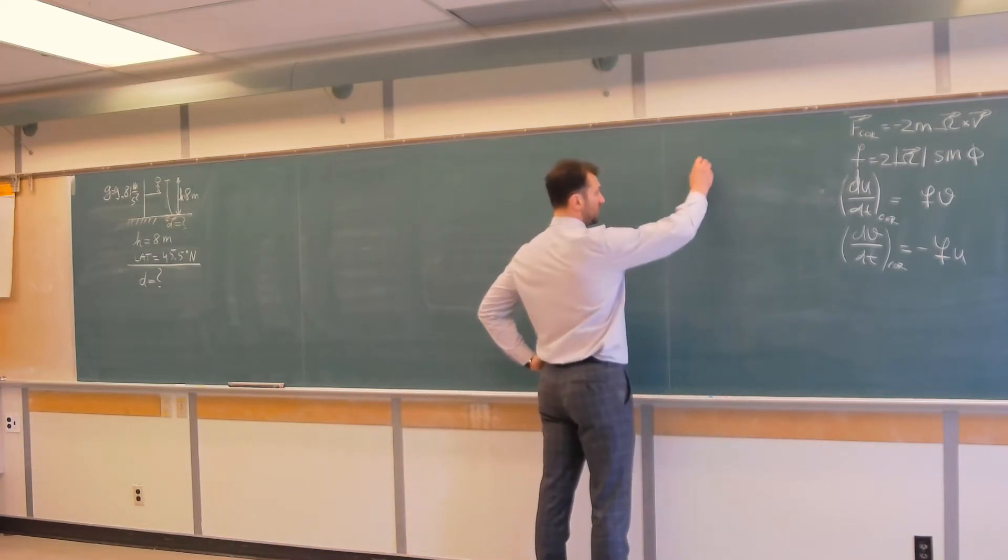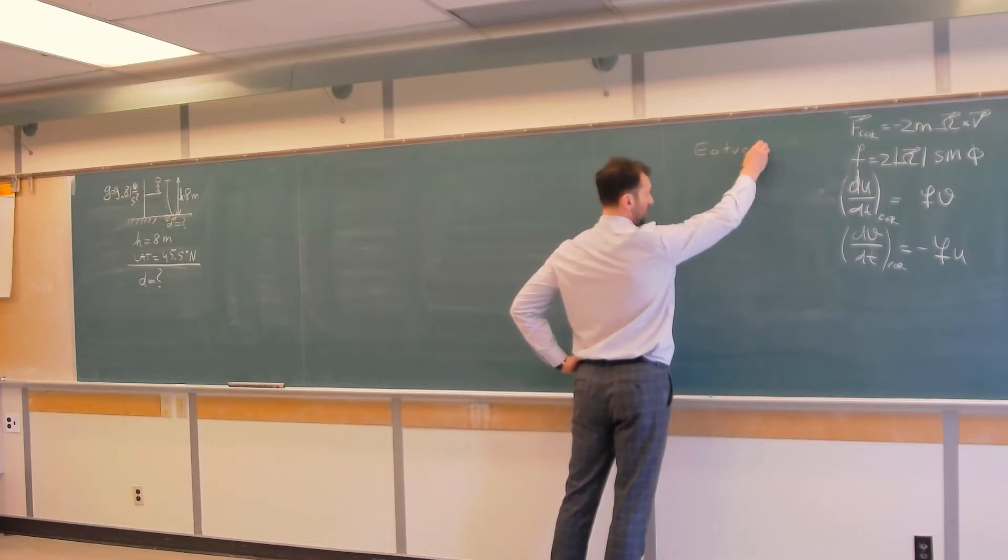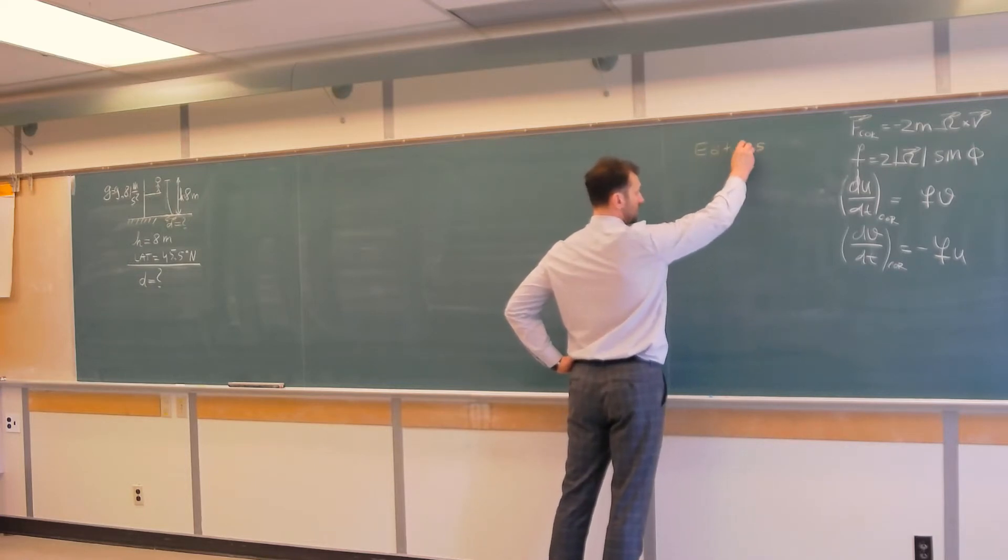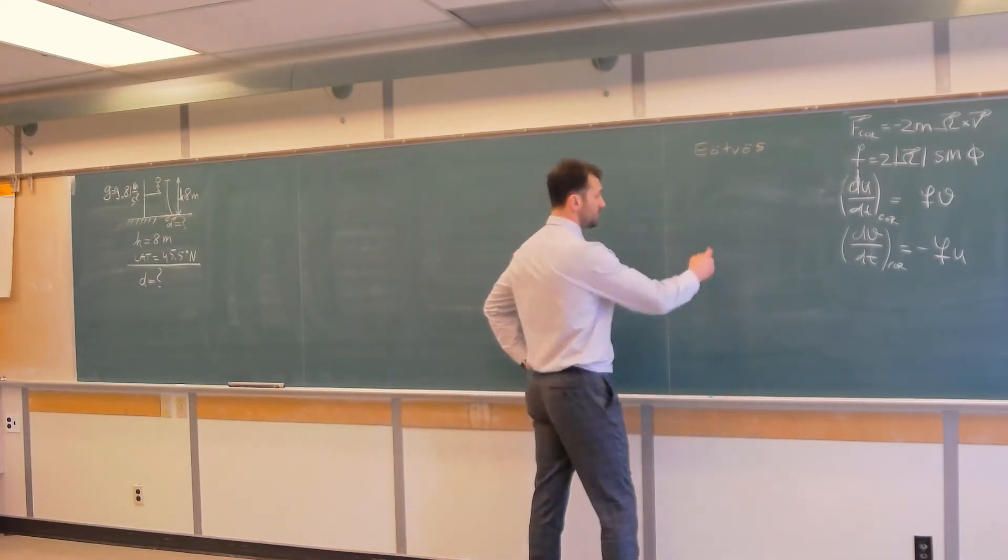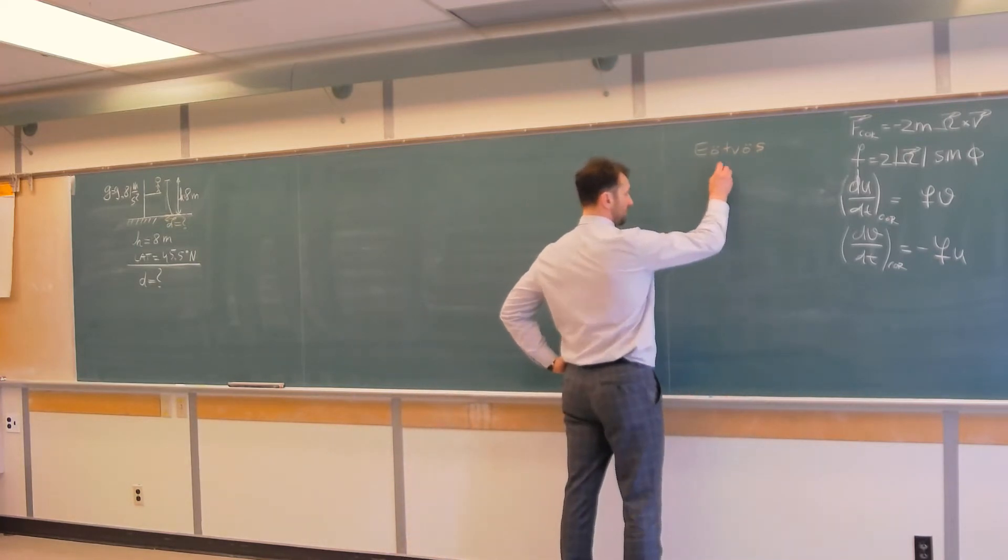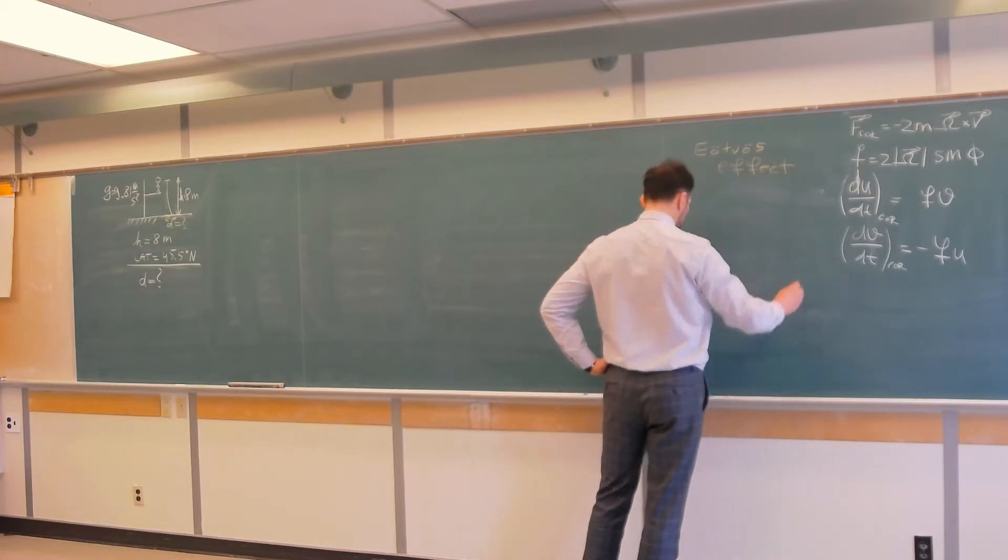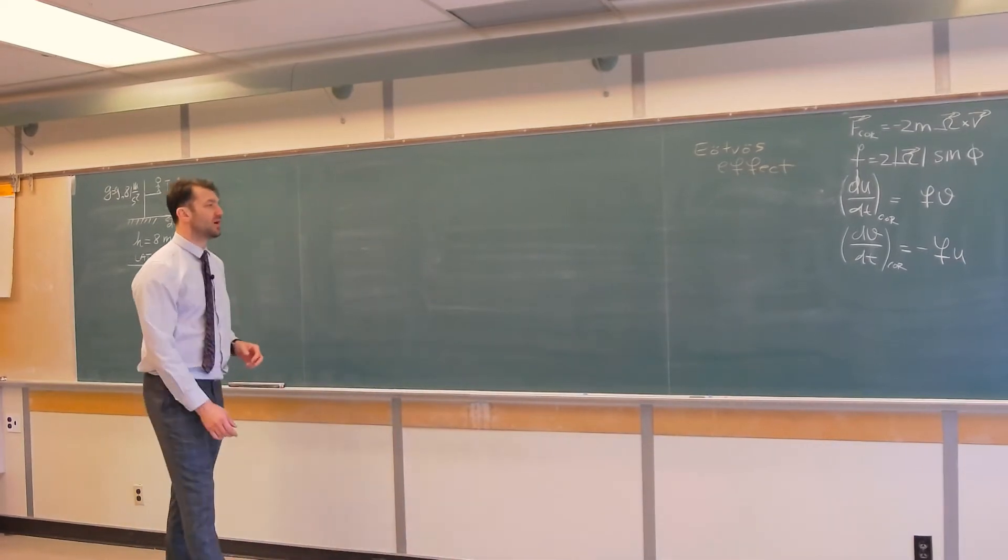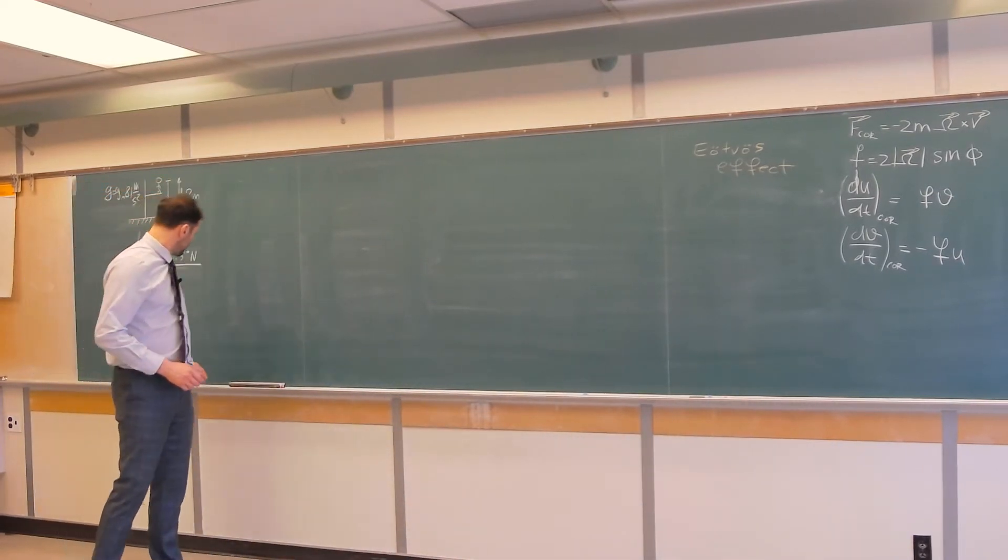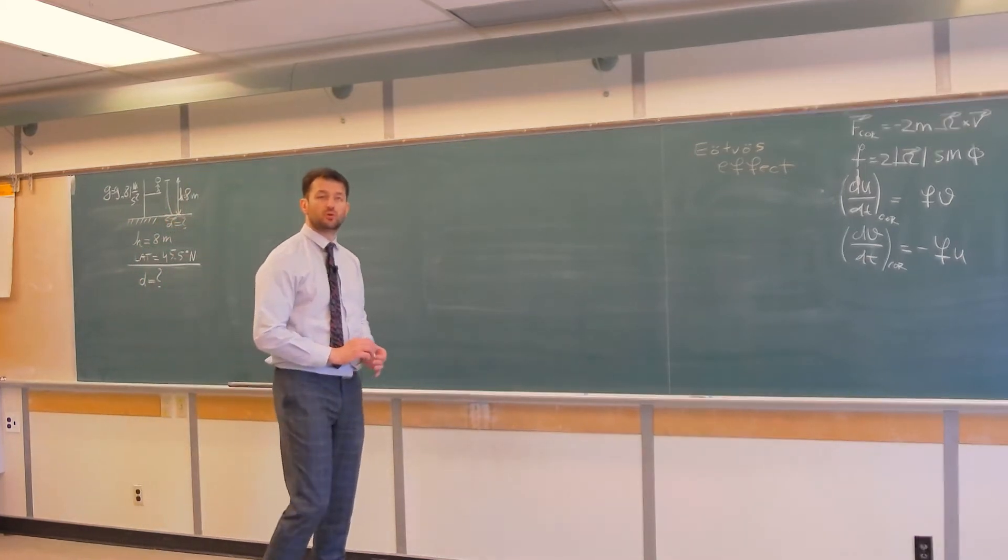For those interested, this effect is called the Eötvös effect, where the O's come with two dots above them. The fellow was Hungarian I think, and to be honest I don't know how to properly pronounce that. If you are familiar with Hungarian language you can let me know in the comment section.